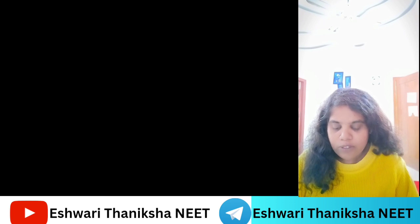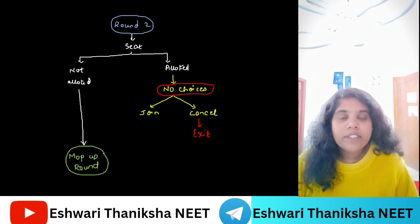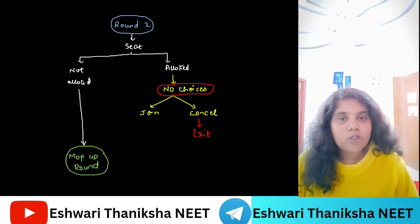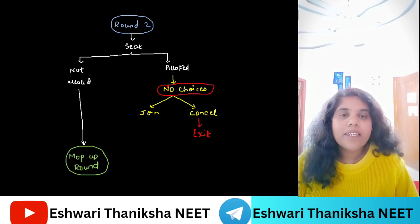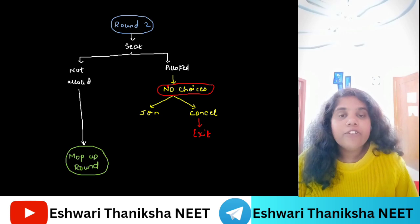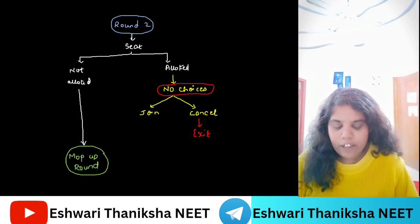From Round 1, you can go to Round 2 in three ways: if a seat is not allotted to you, you will go to Round 2. You can hold the seat — paying the fees — and then go to Round 2. Third option is if you cancel the seat, you can also go and participate in Round 2.